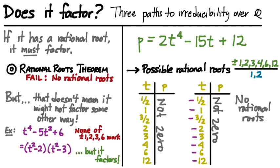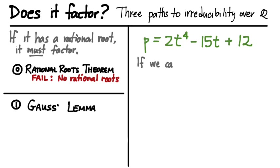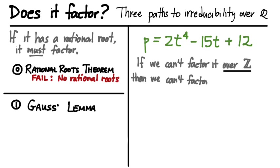So what are our options? What else can we do to decide whether a polynomial is in fact irreducible over the rationals? The first way is not so much a deciding technique as it is a simplifying technique, and it's called Gauss's Lemma. If there is no way to factor this polynomial over the integers, then Gauss's Lemma says there's also no way to factor it over the rational numbers — irreducibility over Z implies irreducibility over Q.